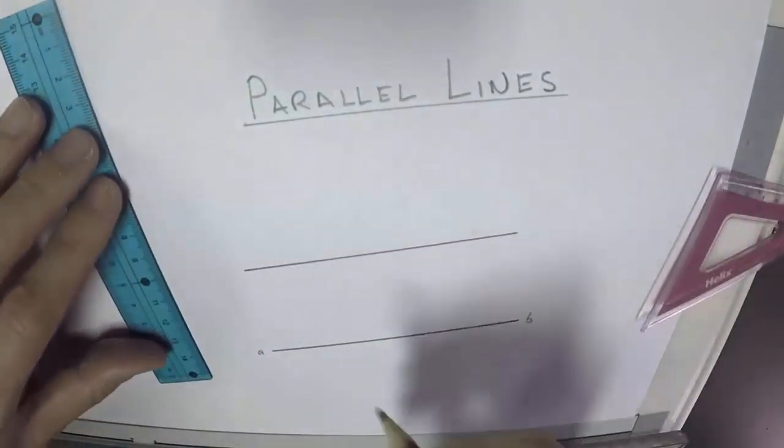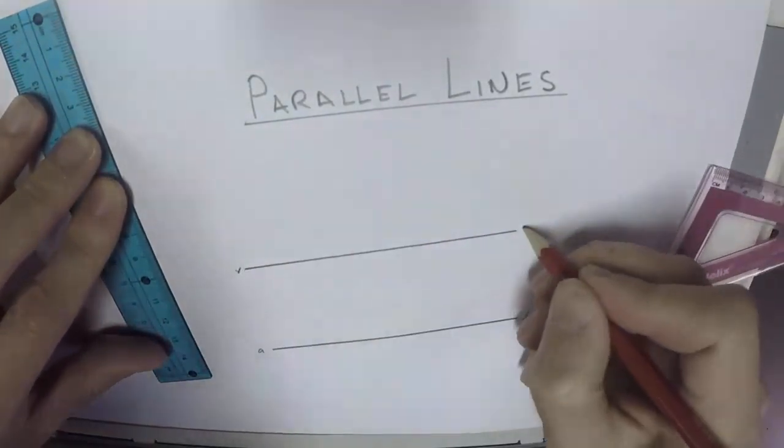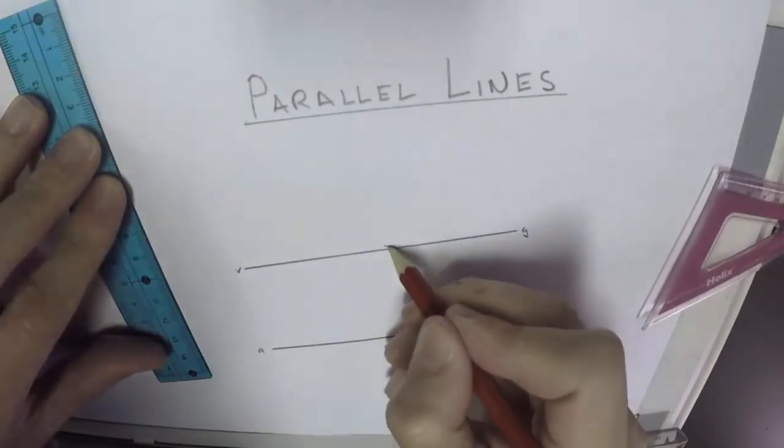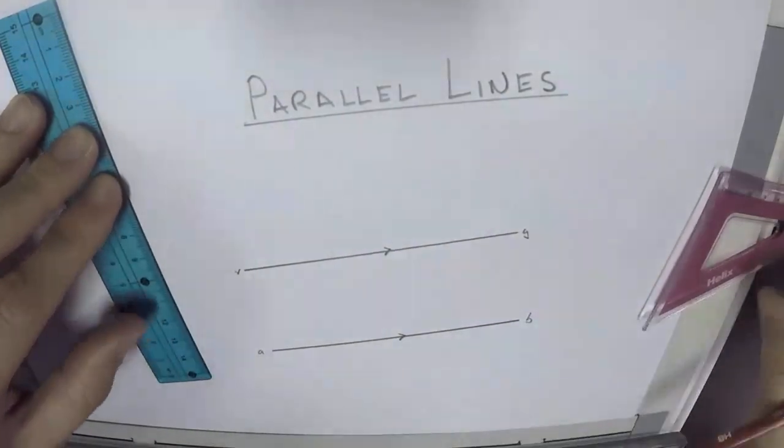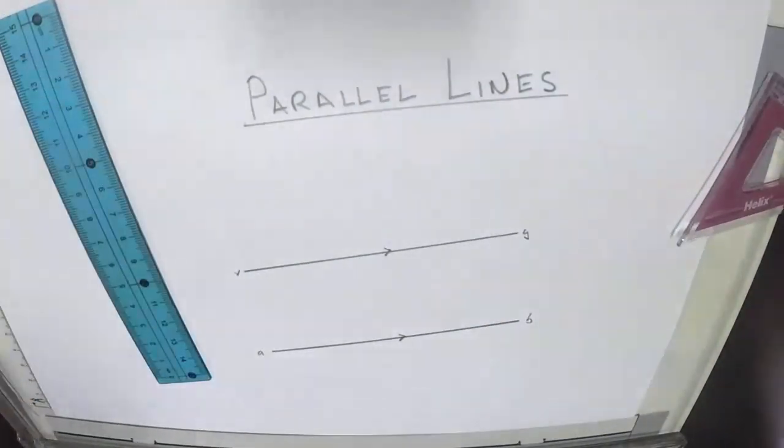Then all we have to do is just draw the line. We then need to label it and to make sure that it is parallel line by putting in those two symbols and that's basically it.